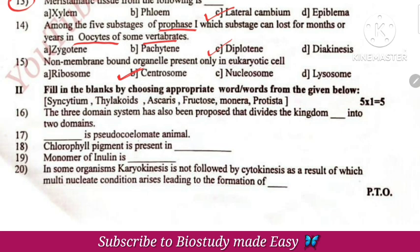The 3-domain system — this kingdom is 2 domains, that is Kingdom Monera. That is Ascaris. Caryokinesis is the division of the nucleus; cytokinesis is the division of the cytoplasm. Continued cytokinesis without caryokinesis leads to a multinucleate condition.